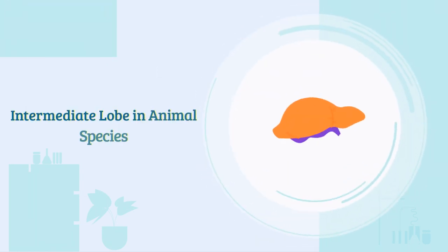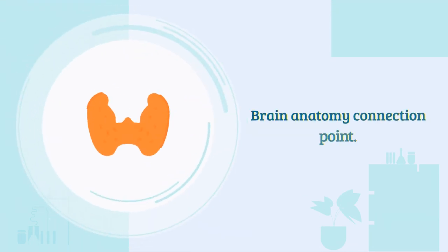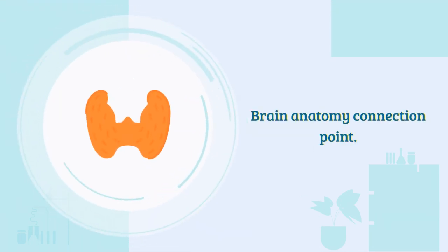The intermediate lobe is present in many animal species but almost absent in humans. It joins the anterior and posterior lobes.